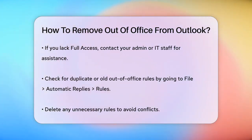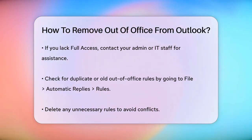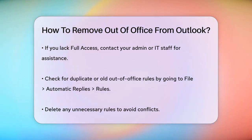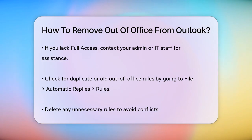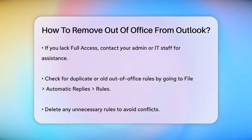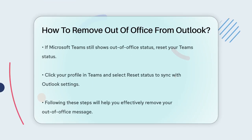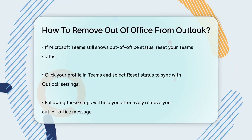If you don't have full access permissions, you'll need to ask your admin or IT staff to remove the out-of-office setting for you. Sometimes issues can arise if there are duplicate or old out-of-office rules. To resolve this, check for any duplicate inbox rules in Outlook by going to File, Automatic Replies, Rules, and delete any unnecessary rules.